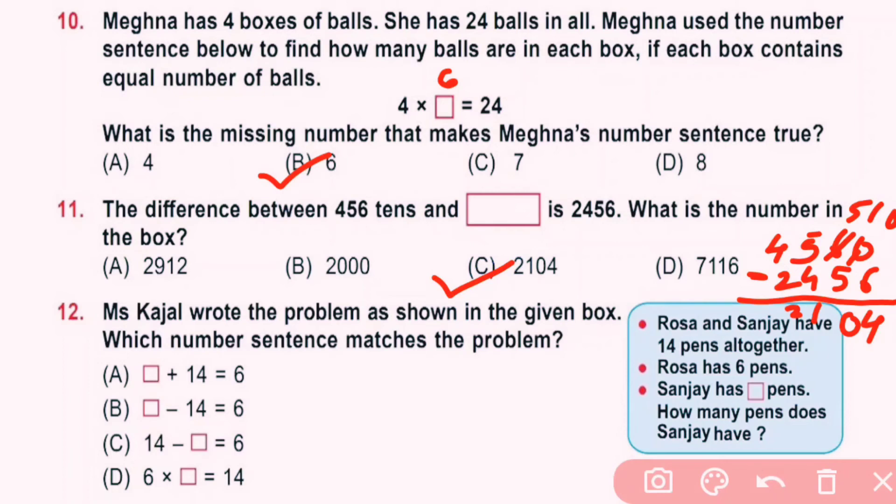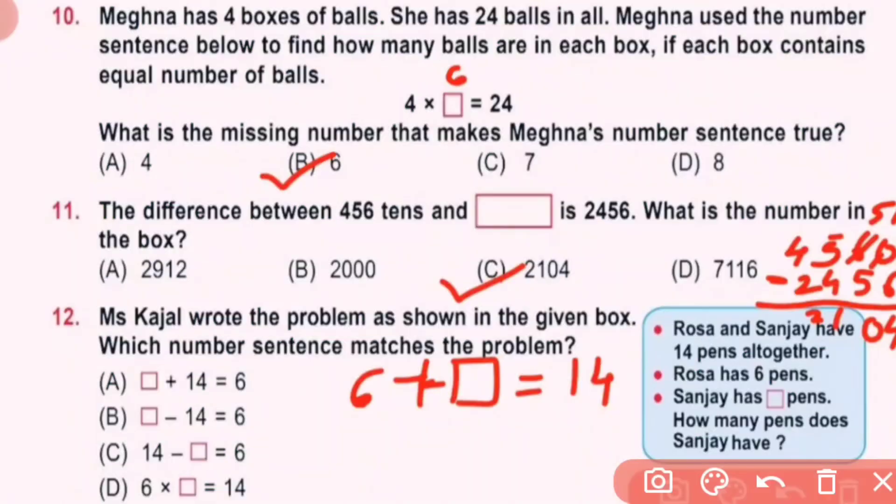Question number 12: Miss Kajal wrote a problem as shown in the given box. Which number sentence matches the problem? Rosa and Sanjay have 14 pens all together. Rosa has 6 pens. Sanjay has dash pens. How many pens does Sanjay have? So all together, so here 6 plus Sanjay's pens equals 14. So C is correct answer.